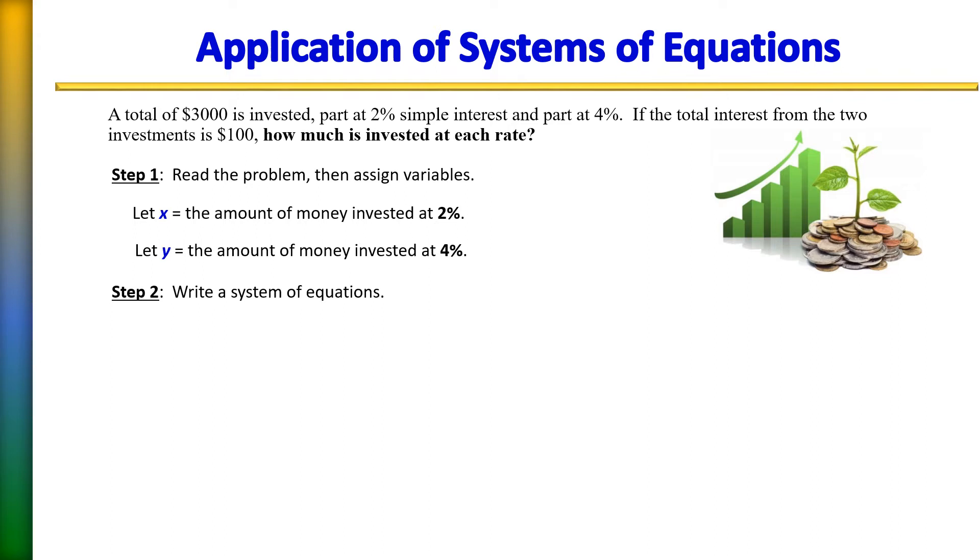We don't know what was invested into the 2%. We don't know the amount also that was invested at 4%. So that's why we're using the variables. But we do know that there was a total of $3,000 that was invested. In fact, that's the very first part of the sentence. So there's our first equation, the amount of dollars invested. We have x plus y equals 3,000. We don't know what was invested into the 2%. We don't know what was invested at 4%. But we do know there was a total of 3,000 invested.